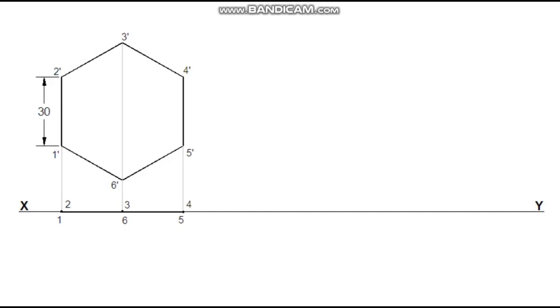The hexagonal plane is 35 degrees inclined to VP. So draw a 35 degree inclined line with the same length as the first stage plan. This 35 degree line is the second stage plan.